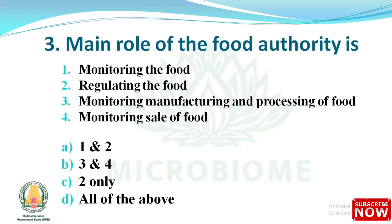Next question: the main role of the food authority is the options are monitoring the food, regulating the food, monitoring manufacturing and processing of food, and monitoring sale of food. The right answer is option D: all of the above — that is monitoring, regulating, manufacturing and processing of food.